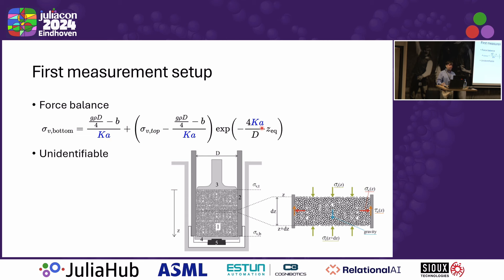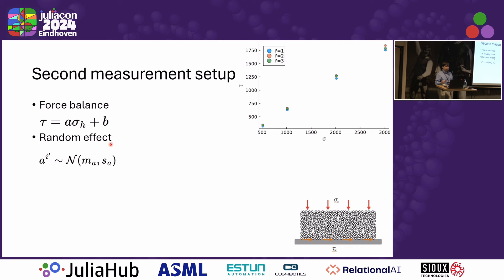Except there is an issue here in this equation, in that the K and the A parameter always occur together in the equation. This means that the model is unidentifiable. There are infinite combinations of K and A, which all fit the data equally well. To remedy this situation, we had to come up with a second measurement setup.